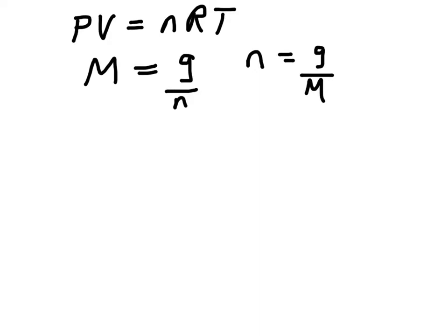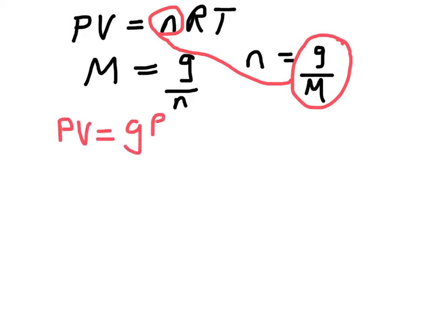Now, you can see that I could take G over M and plug it in here for the N, and I would rewrite this equation as PV is G RT over molar mass.